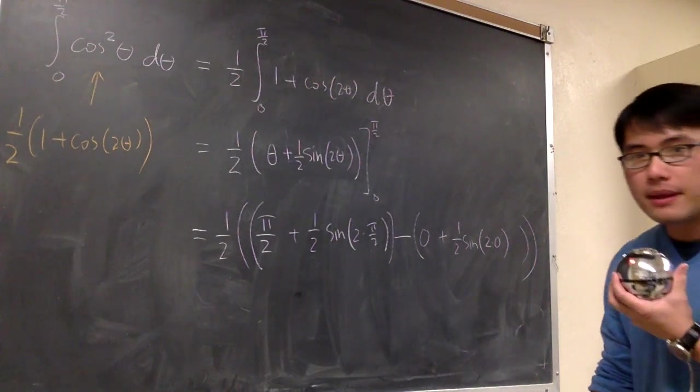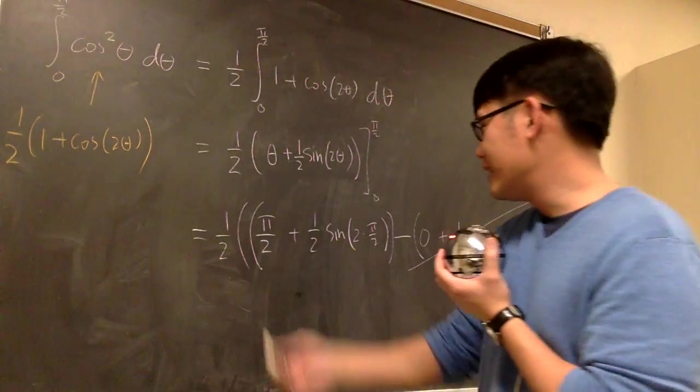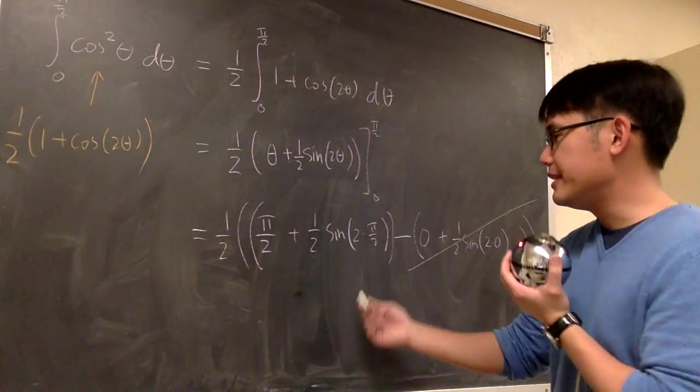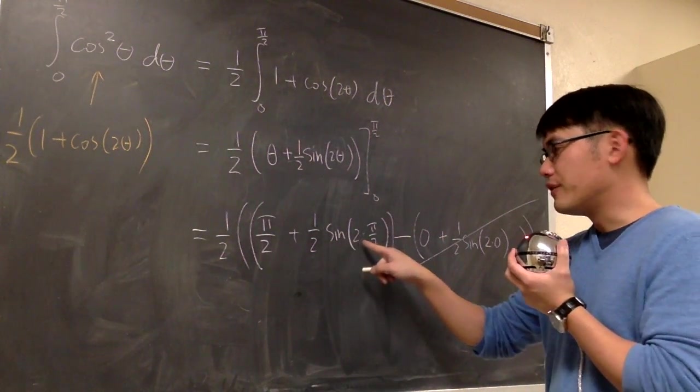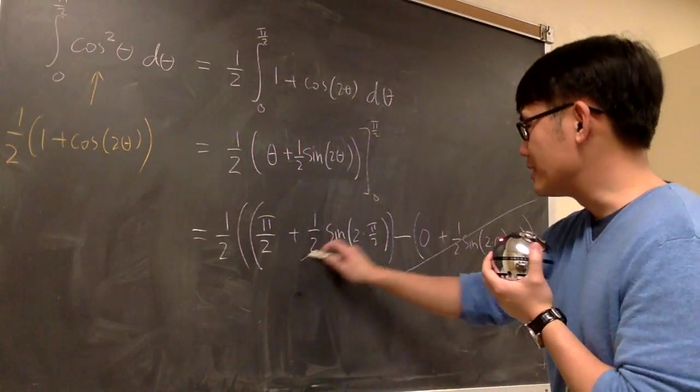Luckily, this is 0. And this is 0. So this is 0 altogether. And then this right here is something we can work out easily. Because sine of this is just pi. 2 times pi over 2 is just pi. So this is also 0.